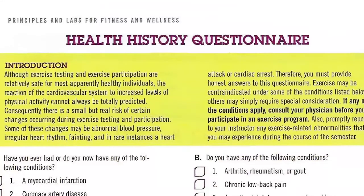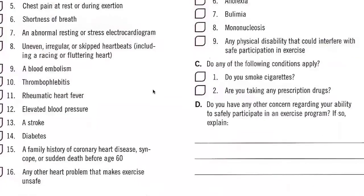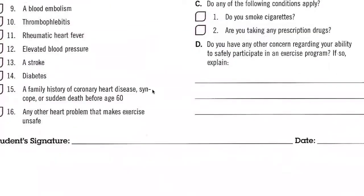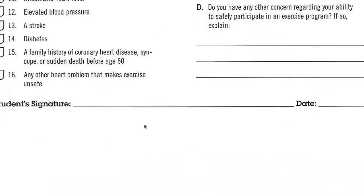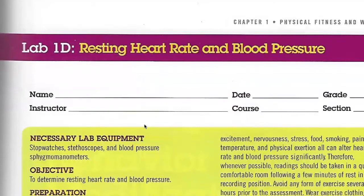The health history questionnaire will be a little more detailed than the PAR-Q, but again these are good resources to have if you're a beginning exercise physiologist or personal trainer working house to house with people. You'll want to keep all of these forms. Then you also have your resting heart rate and blood pressure lab.